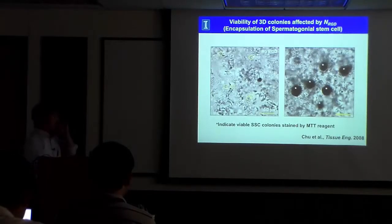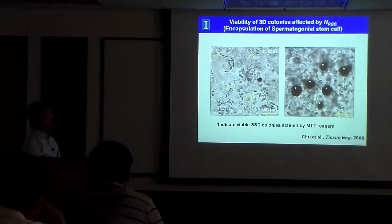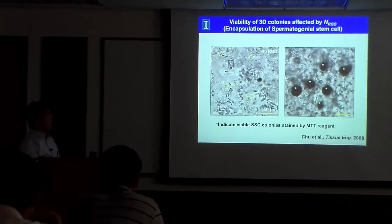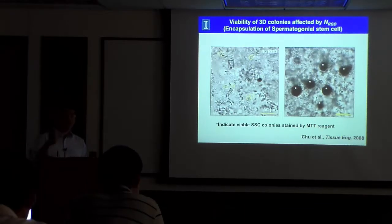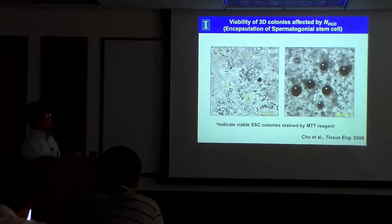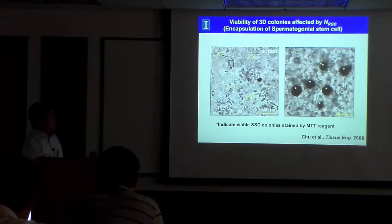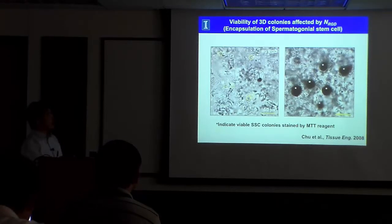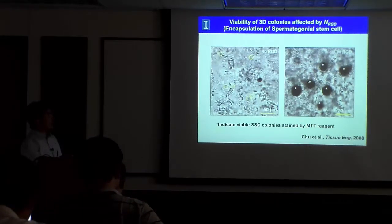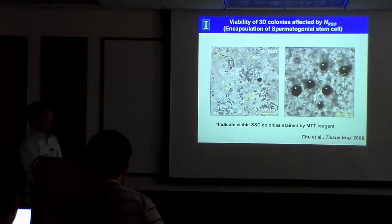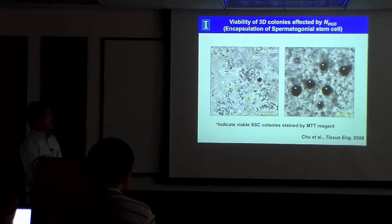We incorporated spermatogonial stem cells in the hydrogel and cultured them for seven days. Cell viability was assessed by staining with MTT reagent, which positively stains metabolically active cells. The gel without any cell adhesion peptide did not retain many viable cells, but cells in the gel modified with the adhesion peptide grew in a 3D matrix, forming colonies with an average diameter around 30 micrometers, and were metabolically very active as confirmed by positive MTT staining.